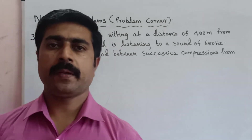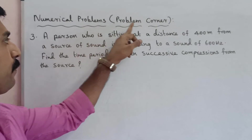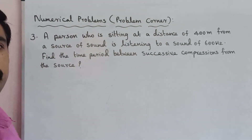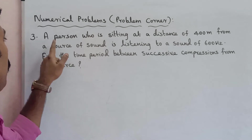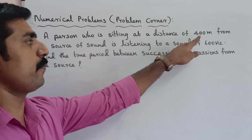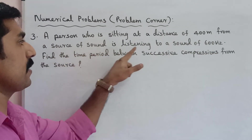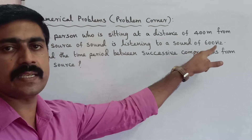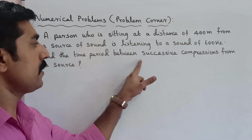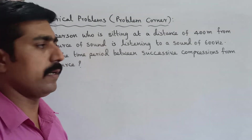Hi students. Now we are going to talk about numerical problems — that is the problem corner, third problem. A person sitting at a distance of 400m from a source of sound is listening to a sound of 600Hz. Find the time period between successive compressions from the source.